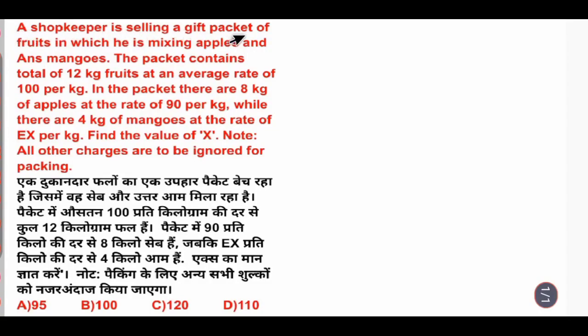A shopkeeper is selling a gift packet of fruits in which he is mixing apples and mangoes. The packet contains total 12 kg fruits at an average rate of 100 per kg. In the packet there are 8 kg apples at the rate of 90 per kg, while there are 4 kg mangoes at the rate of X per kg. Find the value of X. Note, all other charges are to be ignored for packing.